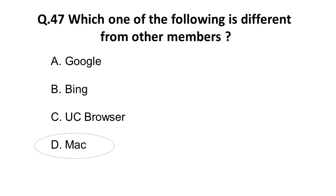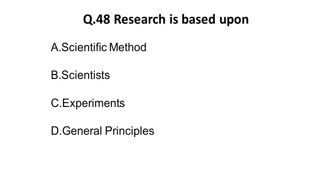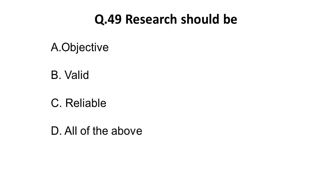The next question: research is based upon — option A is scientific method, option B is scientists, option C is experiments, option D is general principle. Research is based upon the scientific method. If you follow the scientific method, only then will there be valid research.